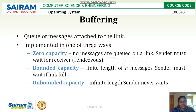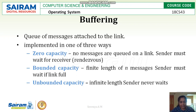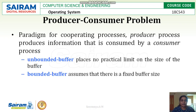In bounded capacity buffer, the buffer size is defined with a set length. N number of messages can be stored and sent by the sender at once. Once the buffer is full, the receiver can read the data from the bounded buffer. In unbounded buffer, the length of the buffer is infinite so the sender never waits for the receiver. In bounded buffer, once the buffer is full, the sender should wait until the buffer is completely read by the receiver.